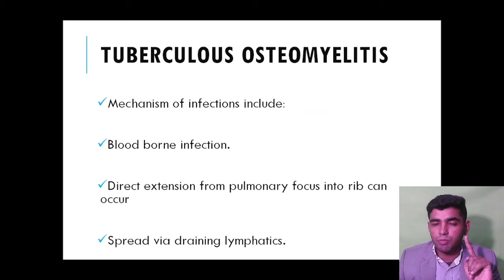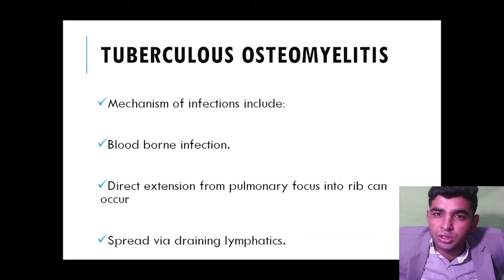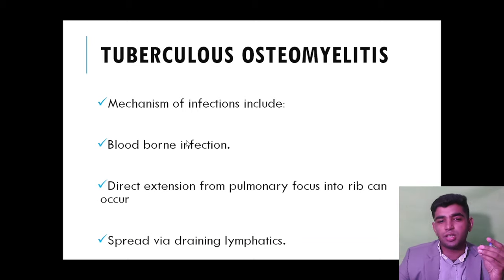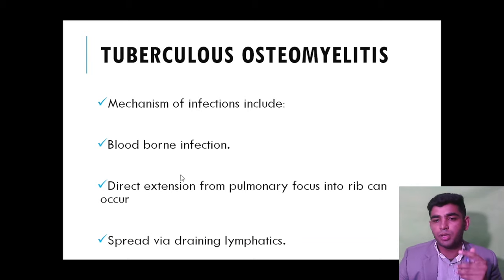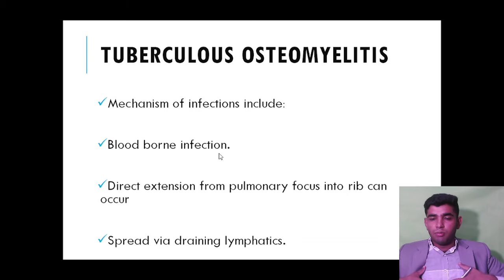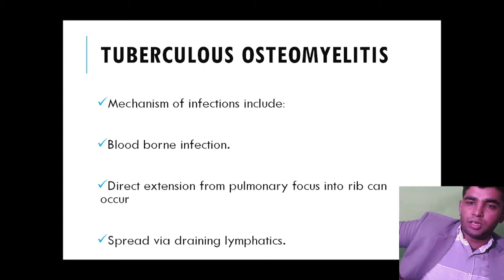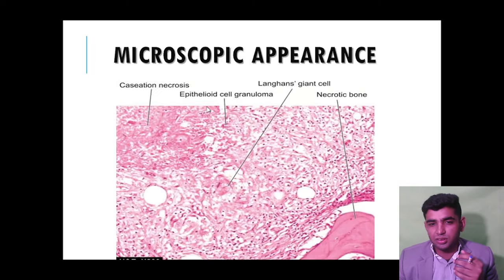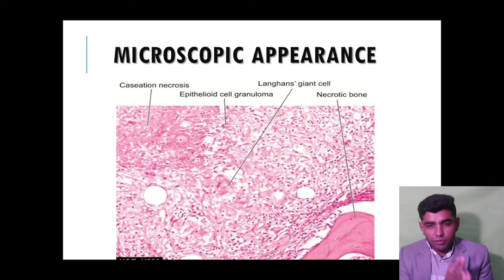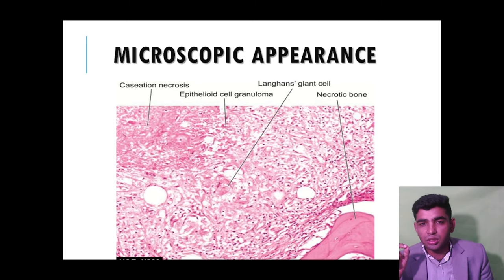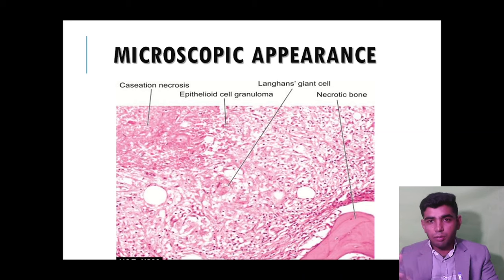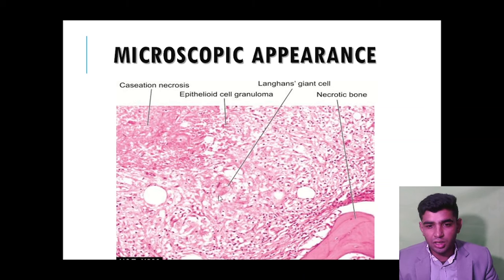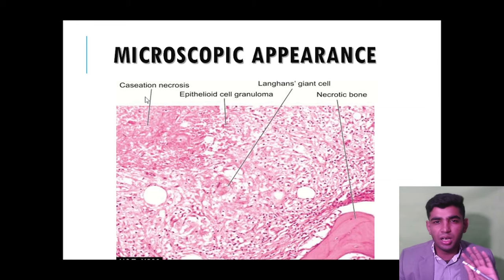Tuberculosis osteomyelitis — if involving the vertebra, it is called Pott's disease, a USMLE MCQ. The mechanism includes blood-borne infection and direct extension from pulmonary foci — Mycobacterium tuberculosis spreads from the lungs to the vertebra via lymphatic drainage. Microscopically: acute inflammation shows neutrophils; chronic inflammation shows macrophages; aggregation of macrophages forms giant cells. TB osteomyelitis shows caseous necrosis.